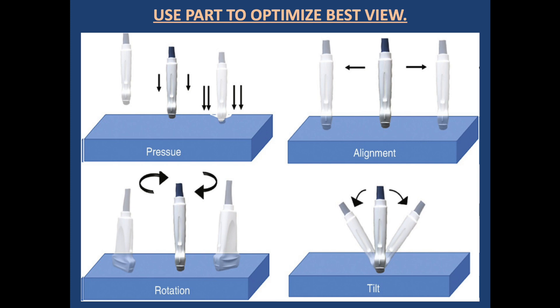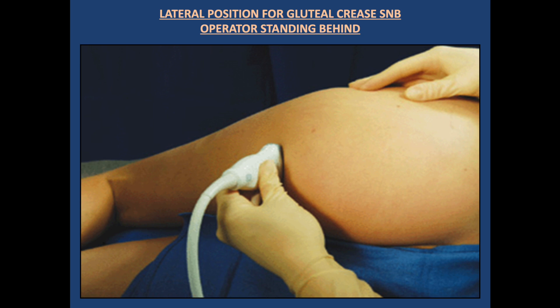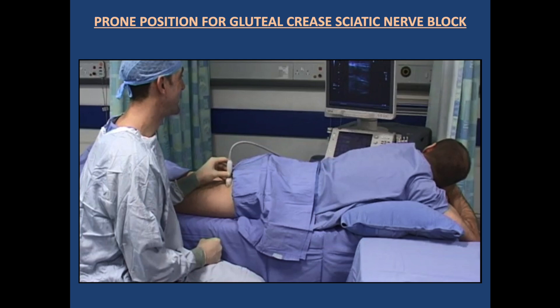Making position for the Gluteal Crease Sciatic Nerve Block: There are two positions — lateral and prone. My favorite position is prone. In the lateral position, the operative side is kept uppermost with hip and knee flexed, a pillow is kept under the head to relax neck muscles, and a linear ultrasound probe is placed in a transverse orientation in the gluteal crease. Elevate the bed to avoid bending. The operator stands behind the patient to view the screen and perform the block comfortably.